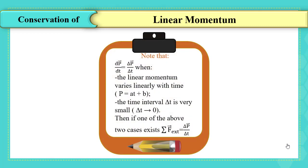Note that we can write dp vector by dt equals delta p vector by delta t when the linear momentum varies linearly with time, where p equals at plus p₀. If we differentiate, we get the constant a, and delta p by delta t gives the slope of this equation. Also, if the time interval delta t is very small and goes to zero, then in either of these cases, the sum of external forces can be written as delta p vector over delta t.